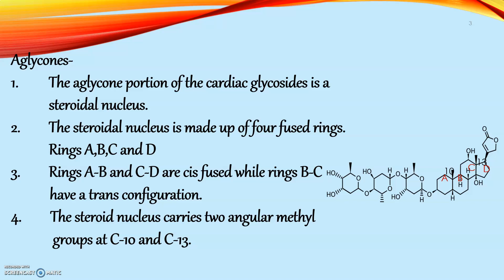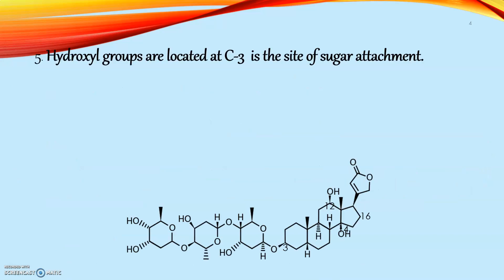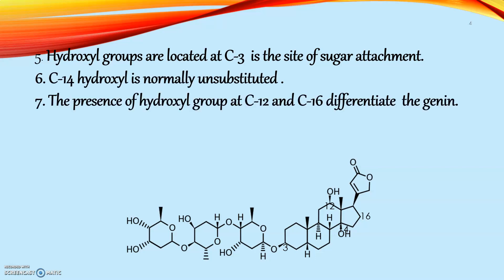The steroidal nucleus carries two angular methyl groups at C10 and C13. Angular methyl means a methyl group attached to carbon 10 between rings A and B, and to carbon 13 between rings C and D of the steroid nucleus. The steroid nucleus has hydroxyl groups at C3 and C14 positions, of which the sugar attaches at the C3 hydroxyl group.